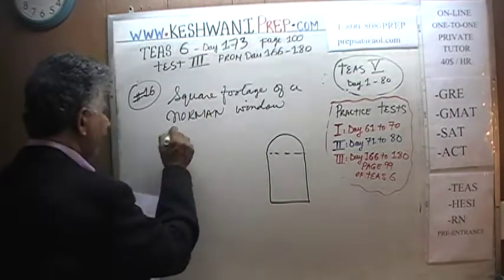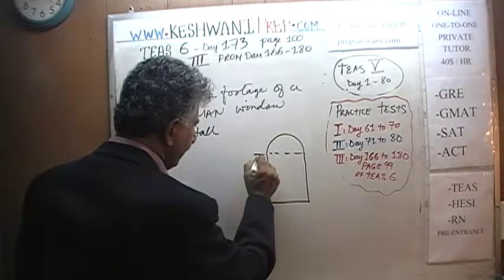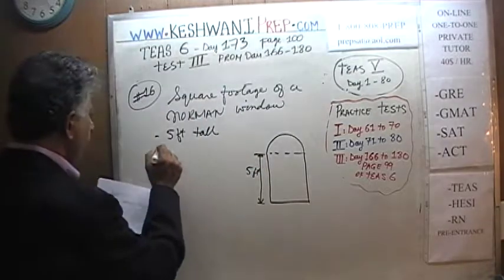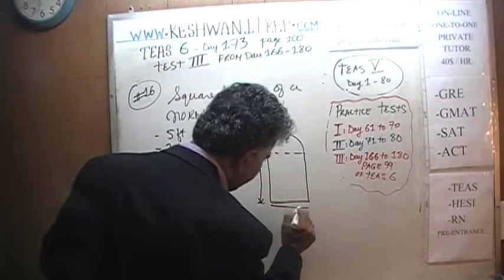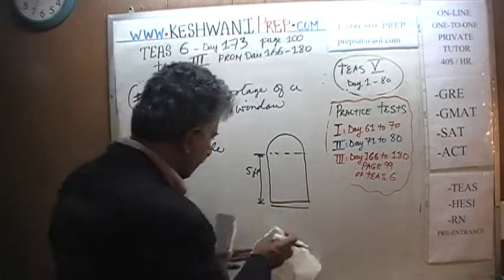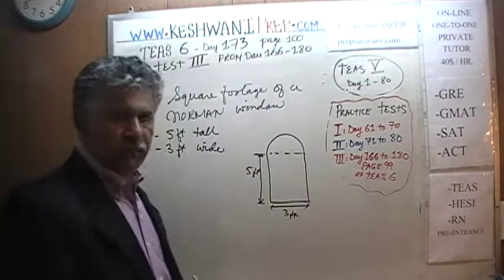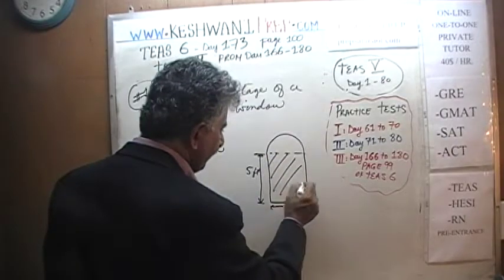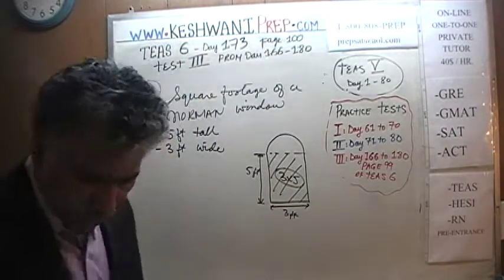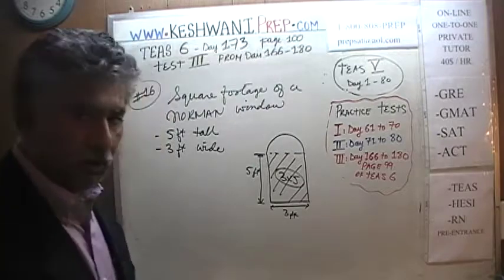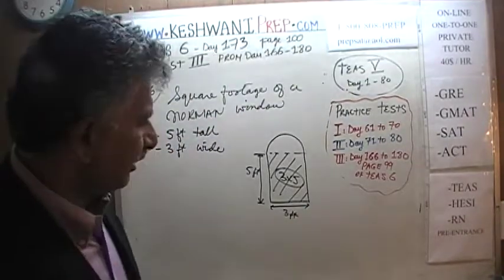A Norman window looks like this: you have a rectangle, and on top of it a semicircle — like the ones you see in churches. We are told it is five feet tall, meaning from bottom to top of the rectangle is five feet, and three feet wide. Finding the area of the rectangle is straightforward: three by five equals fifteen square feet. The tricky part is measuring the area of the semicircular region on top.